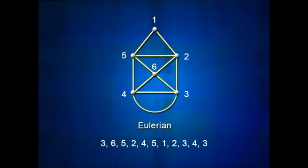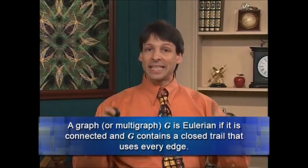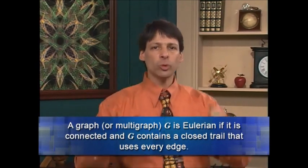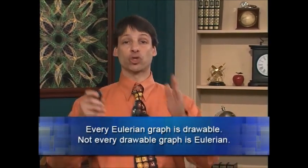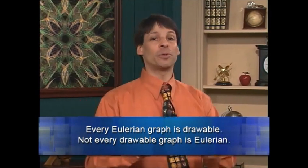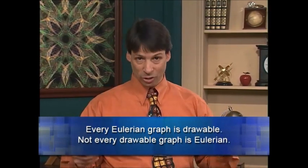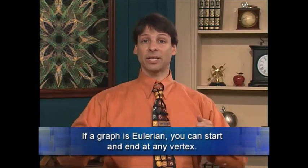These kinds of graphs are called Eulerian. The official definition: a graph or multigraph G is Eulerian if it's connected and G contains a closed trail that uses every edge. So every Eulerian graph is drawable, but not every drawable graph is Eulerian — to be Eulerian you must be drawable in such a way that you end at the same place you started. The first drawable graph we saw is drawable but not Eulerian.